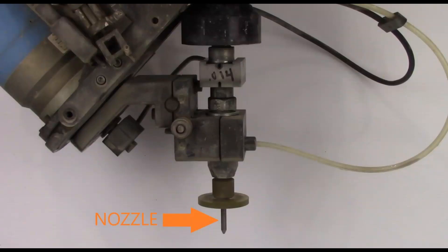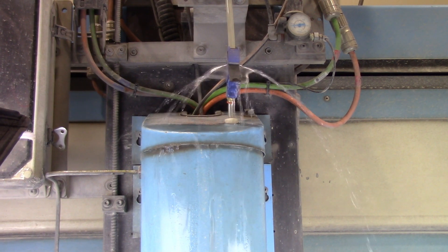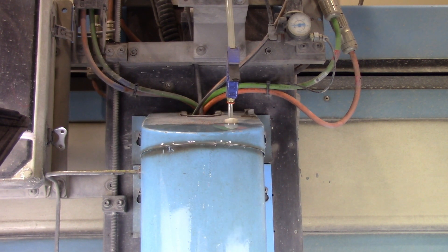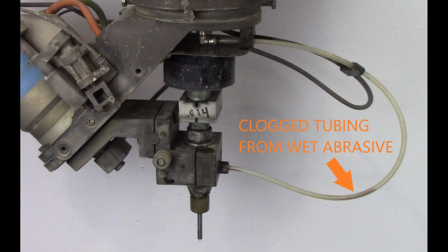A clogged nozzle is generally caused by particulate that is too large to pass through the nozzle and becomes stuck. A clogged nozzle can cause the ultra-high-pressure water to back up into the abrasive feeding tube. If you notice a slurry coming out of the abrasive relief valve, shut the system down to correct the problem.